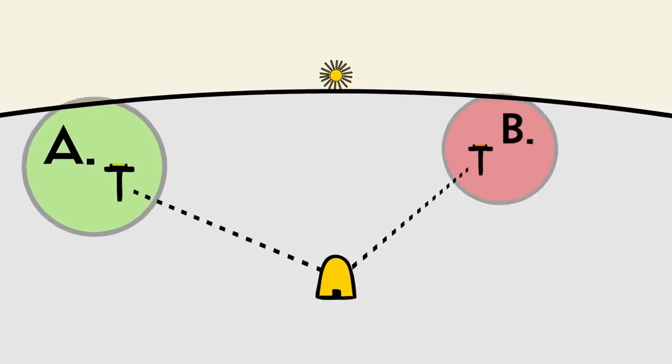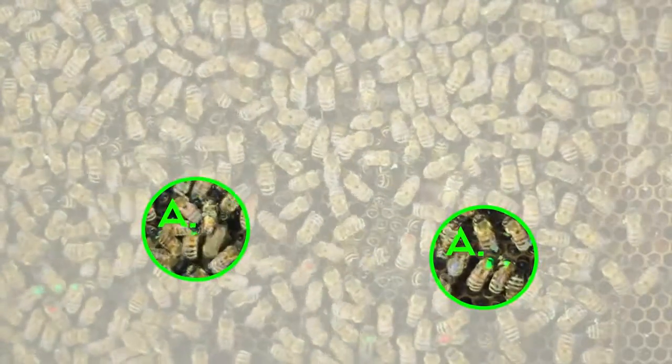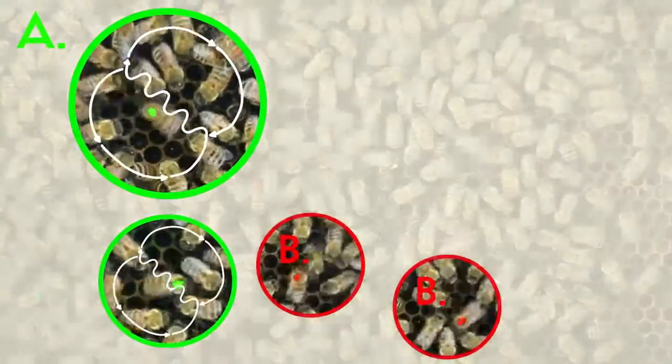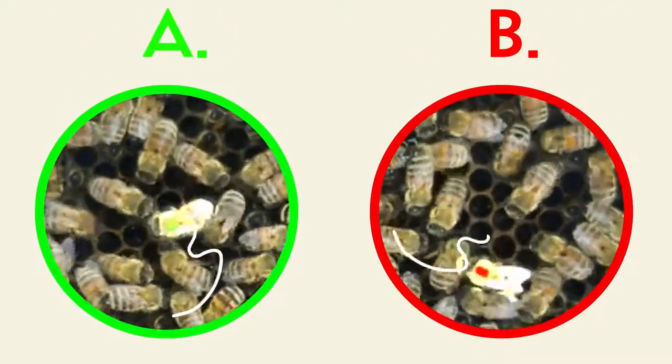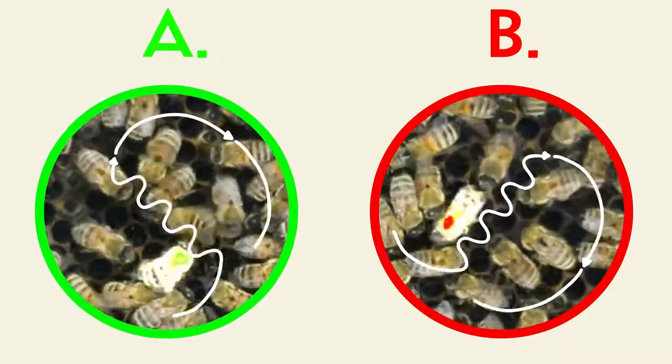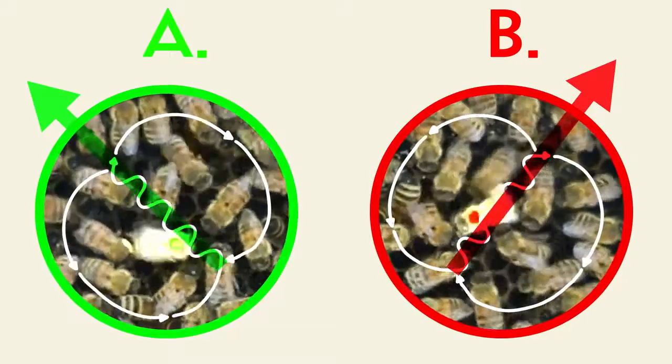In this two-station experiment, von Frisch noticed that the bees returning from the same feeding source danced differently from bees that arrived from the other location. While both sets of bees perform the classic figure eight dance, the orientation of the dances is offset between the two groups.